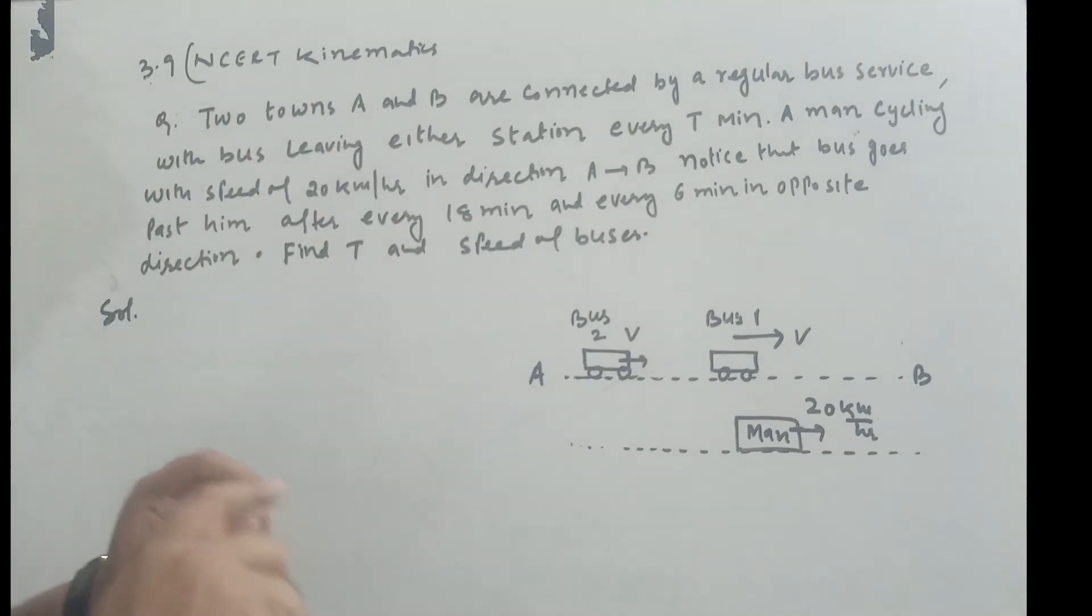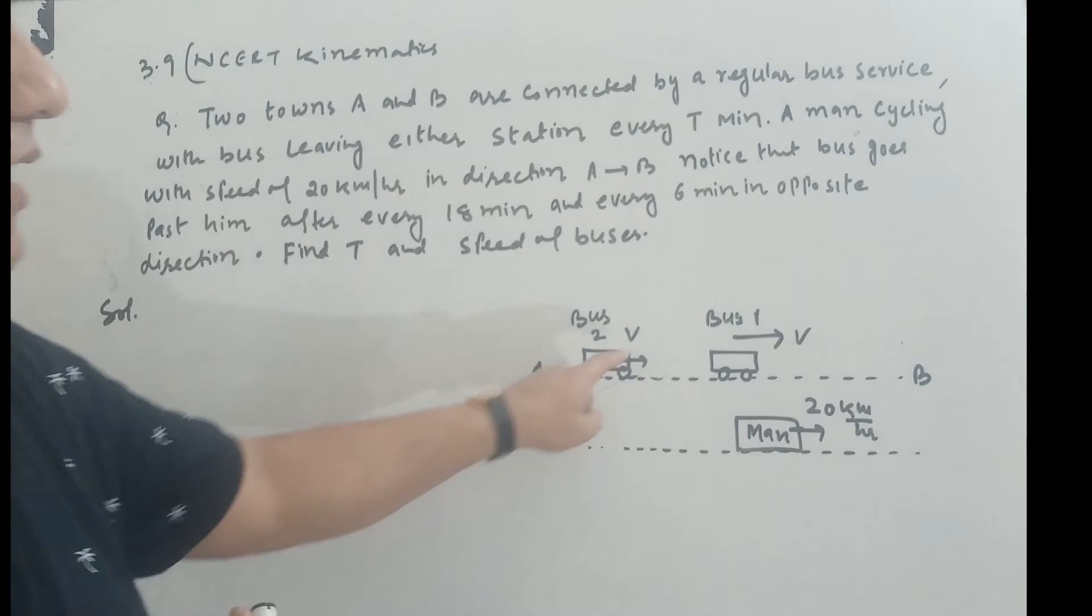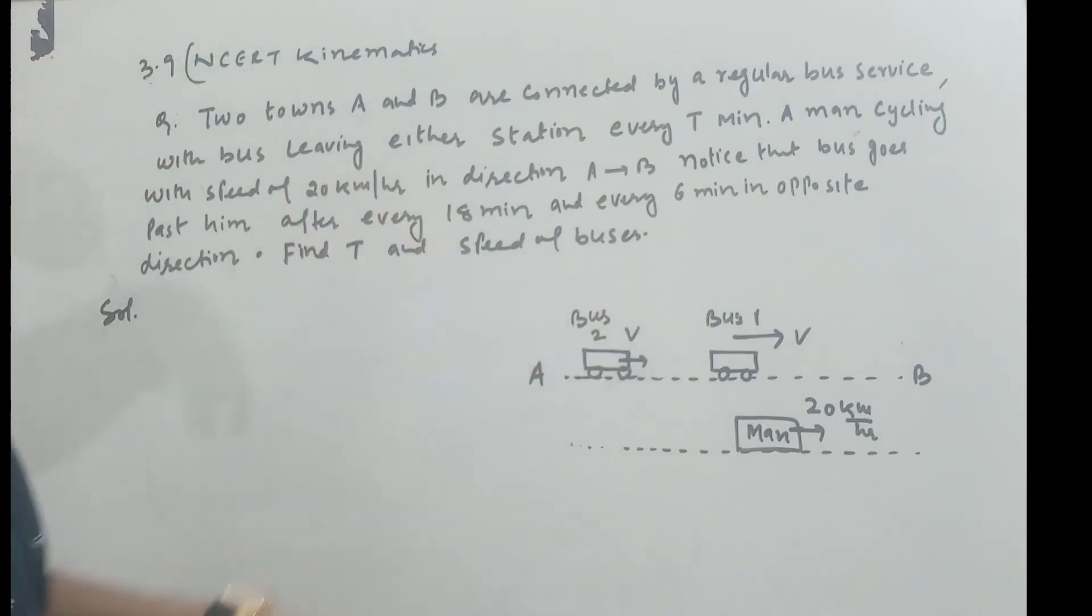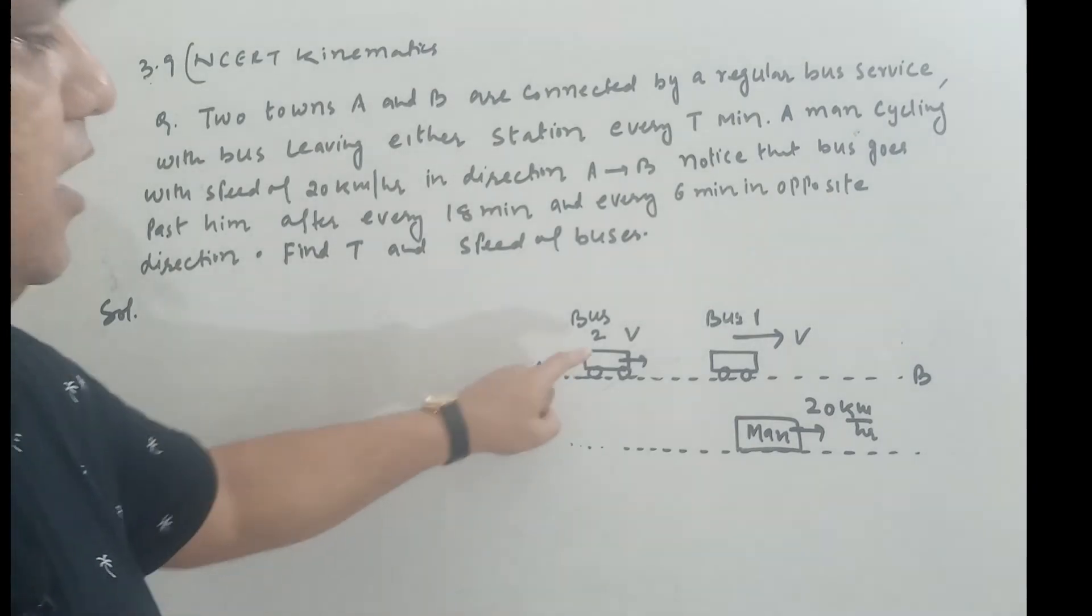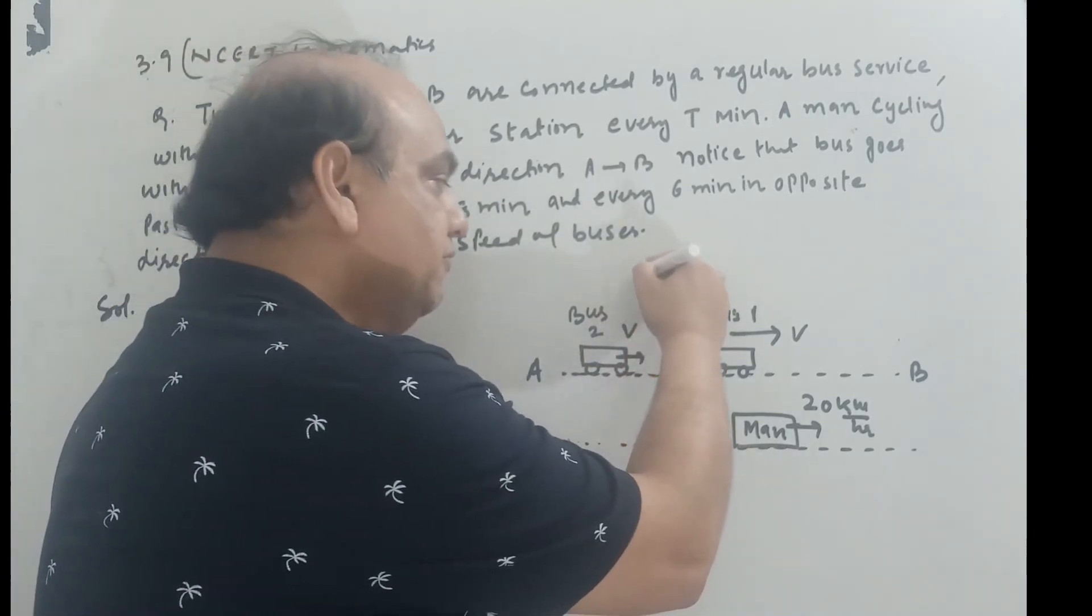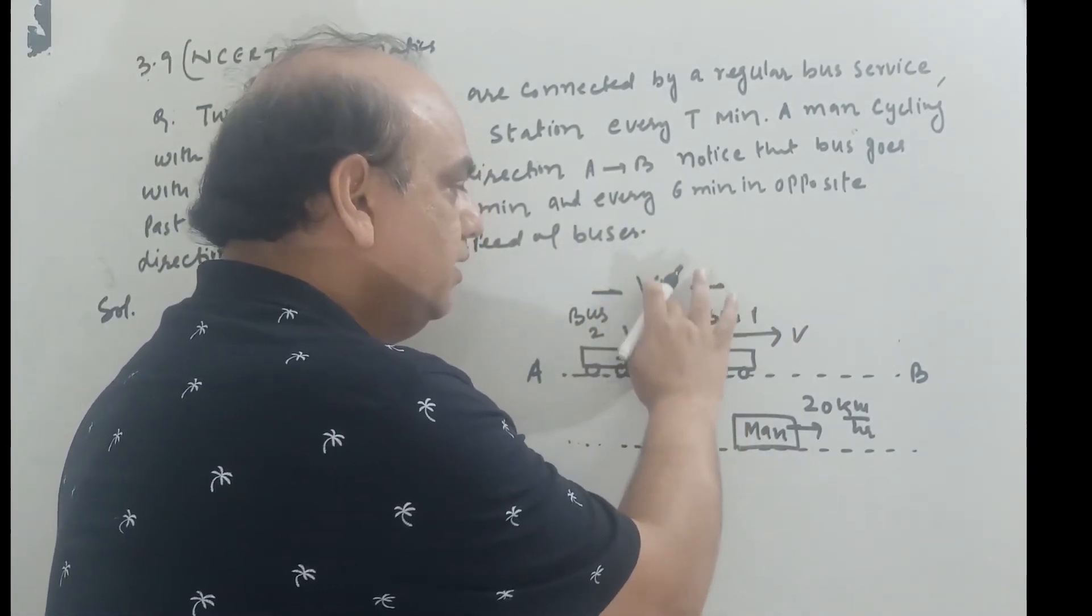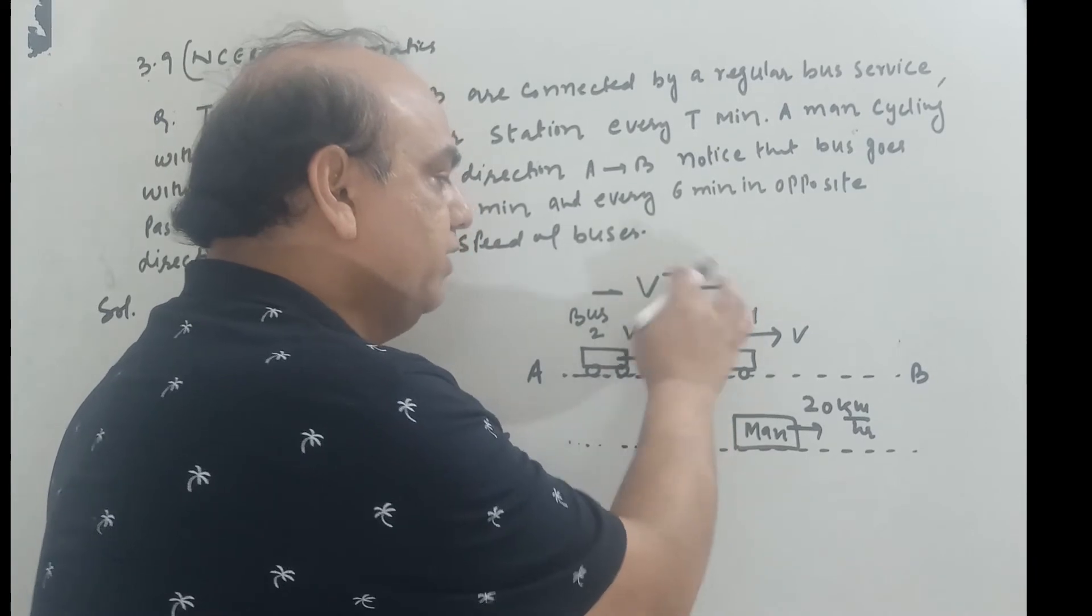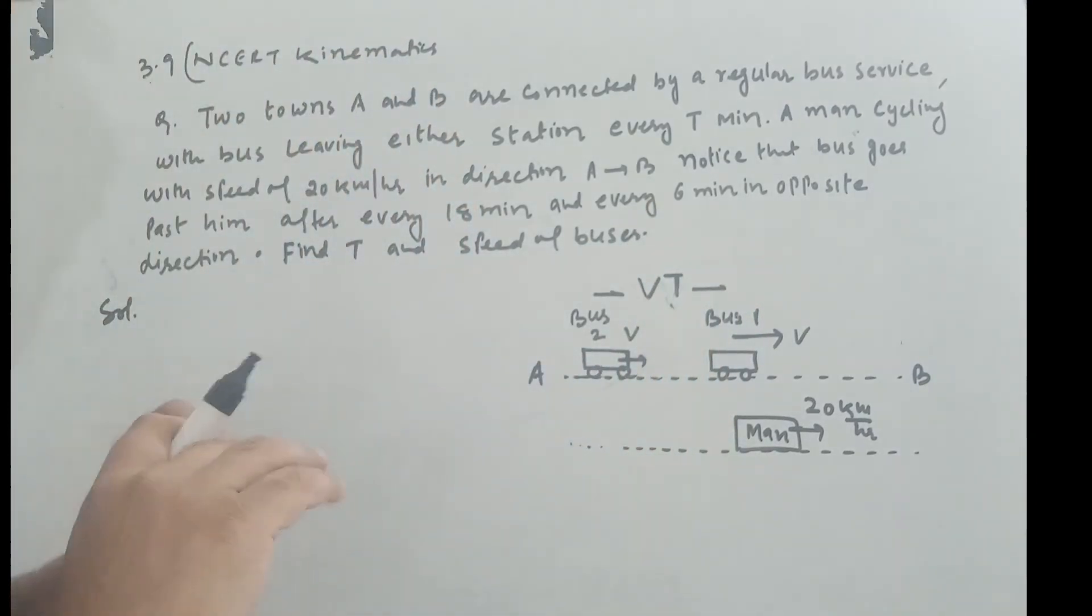Every bus is moving with a constant speed. Now for a minute, let's forget the person. We know that every bus is at T time. We can say that this bus is VT distance apart, because speed is constant, V into time. Separation between every bus is VT. This is clear?